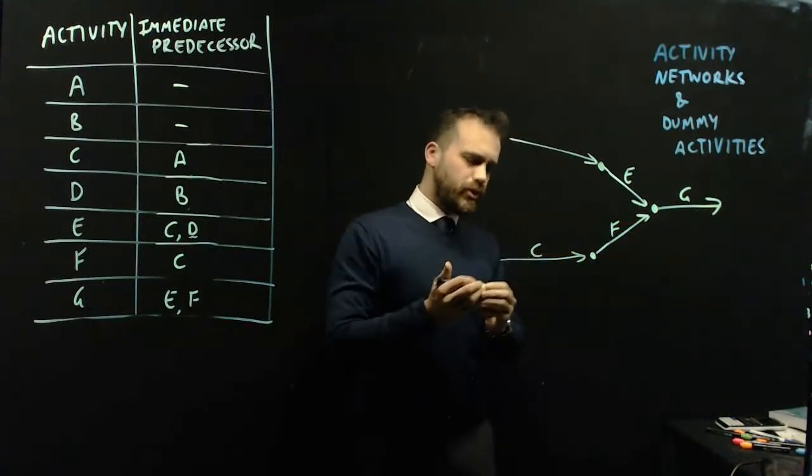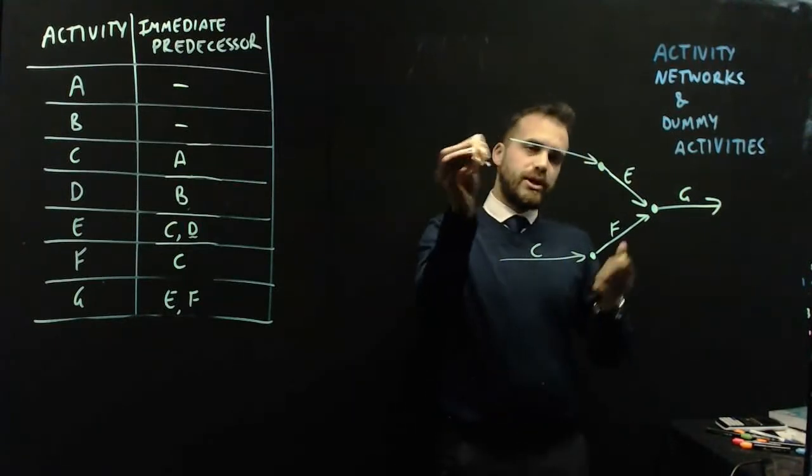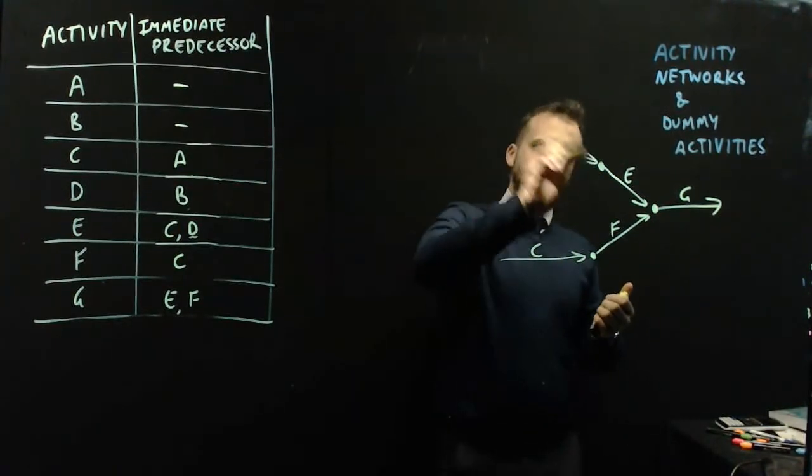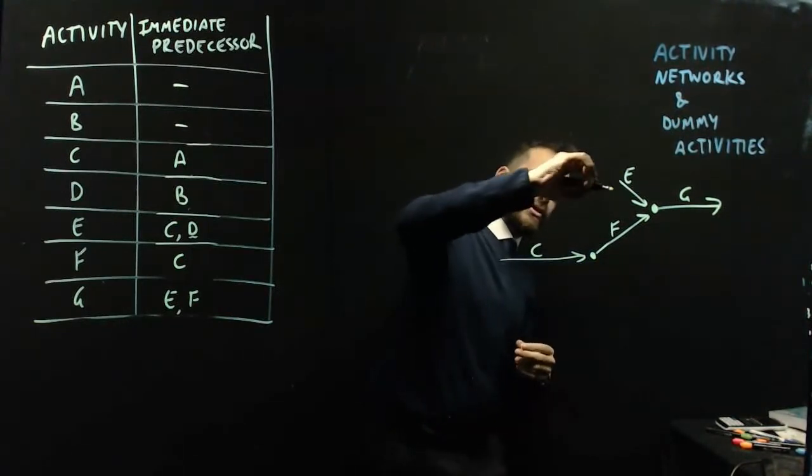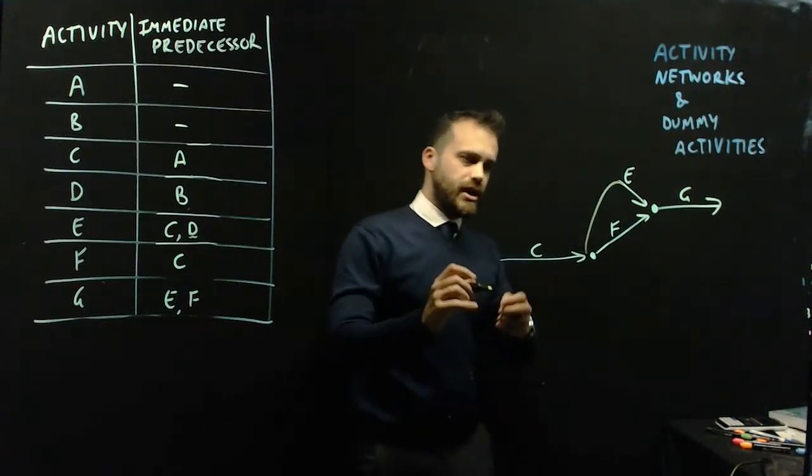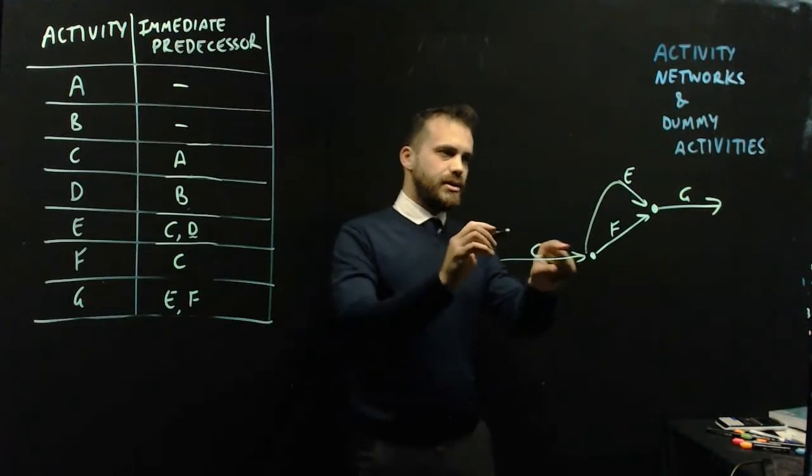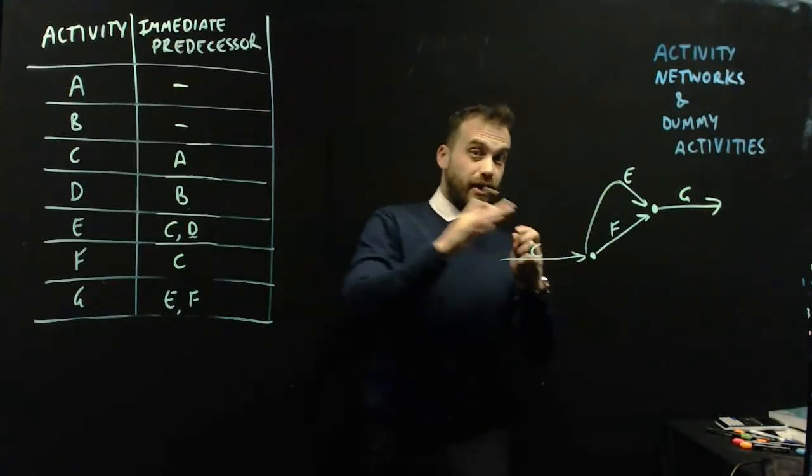That wouldn't be a problem. Because we could do something like this. We could try to tidy it up a little bit. I could say that C is the immediate predecessor of both E and F. And that's not a problem.